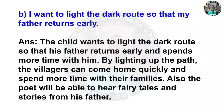Wish 2: I want to light the dark roots so that my father returns early. The child wants to light the dark roots so that his father returns early and spends more time with him. By lighting up the path, the villagers can come home quickly and spend more time with their families. Also, the poet will be able to hear fairy tales and stories from his father.